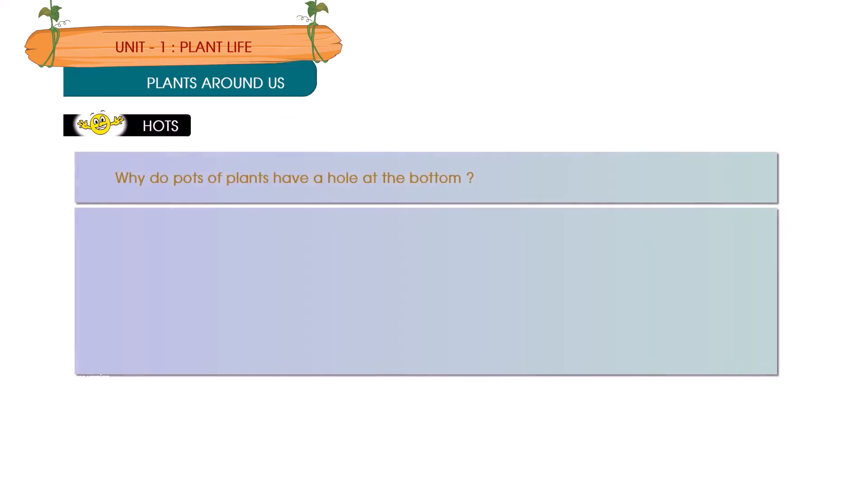HOTS. Why do pots of plant have a hole at the bottom? Answer: A pot of a plant has a hole at the bottom because it allows the excess amount of water in the pot to flow out. This saves the plant from decaying.